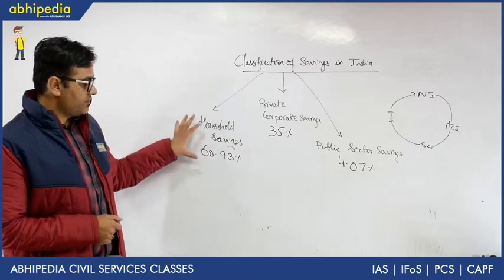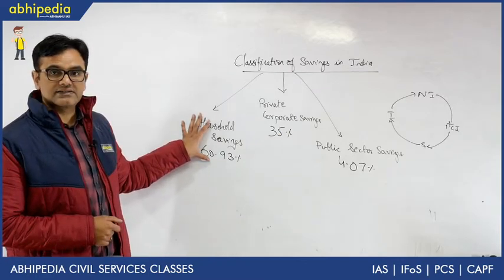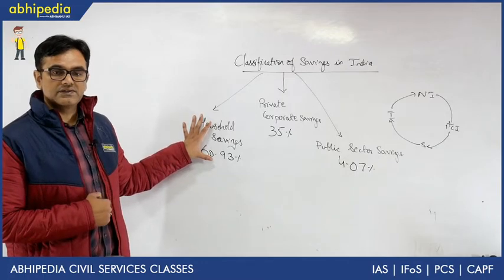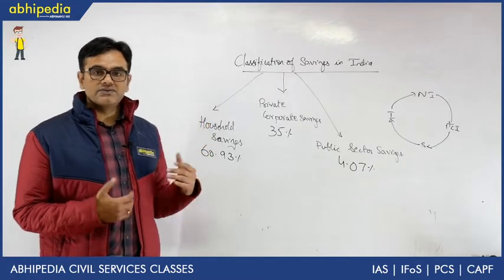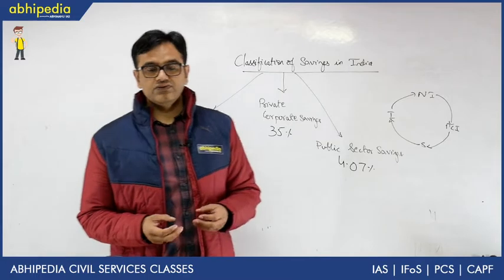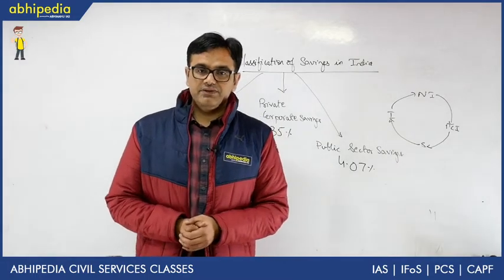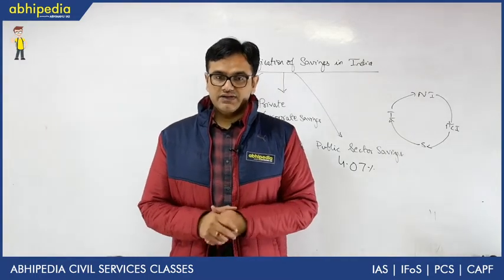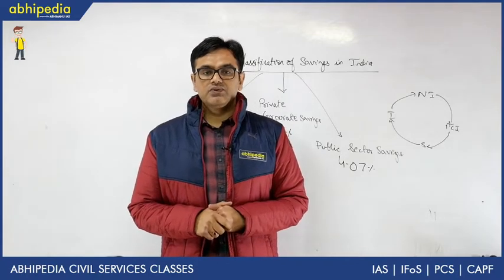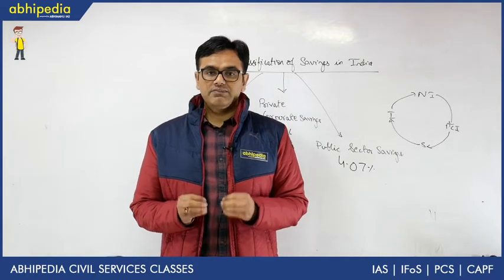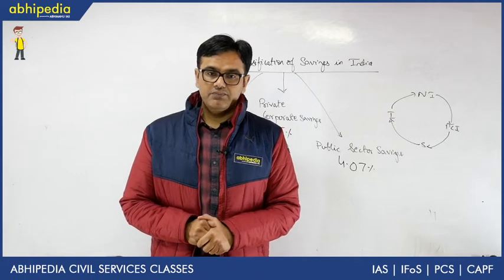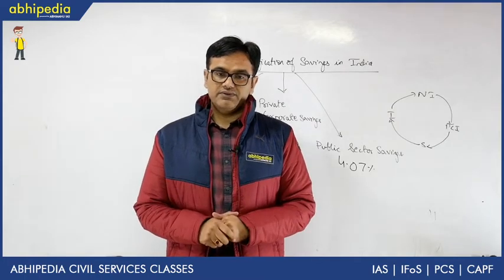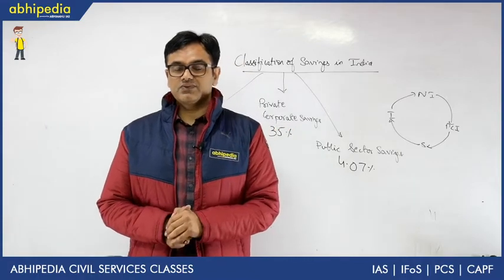The biggest component of saving in India is 60.93% — almost 61% — of saving in India is by the household sector. The household sector basically includes small businesses, salaried people, and cottage industries. These people have both the need to save and the capability of saving if they are above the poverty line, and they actually do most of the saving in India — as you have seen, 61% of the total savings.